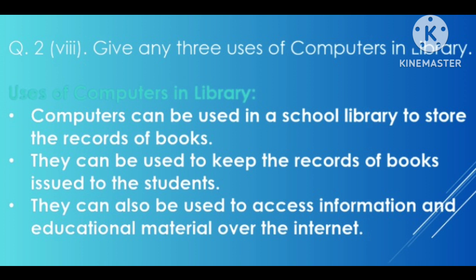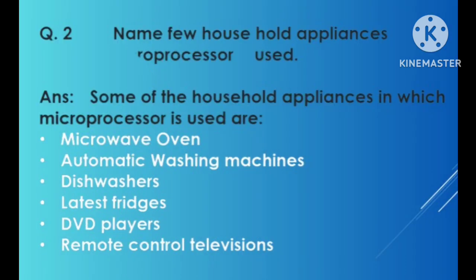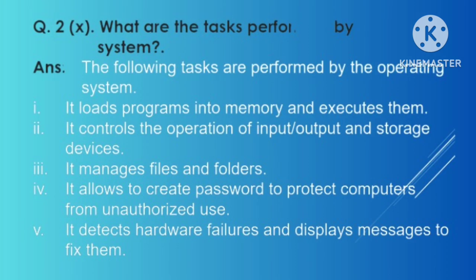Next question: give any three uses of computers in a library. The answer link will be provided. Next question: name a few household appliances that use a microprocessor. Microprocessor is used in microwave ovens, automatic washing machines, dishwashers, latest fridges, DVD players, remote controls, and televisions.